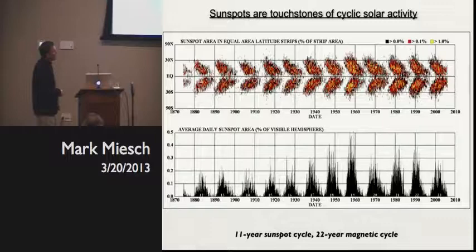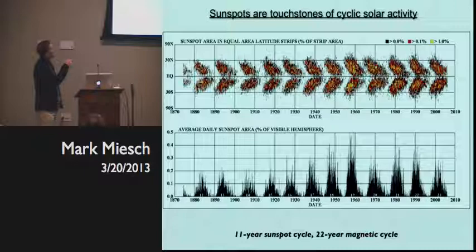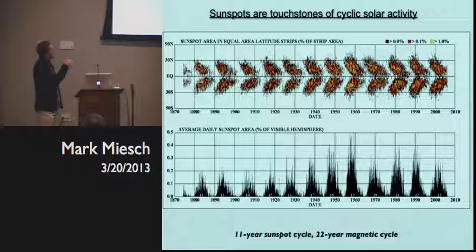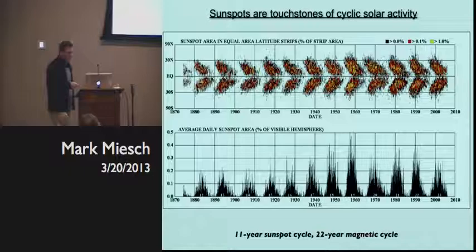Sunspots are sites of flux emergence — sites where magnetic energy passes through the solar surface, coupling the interior and the corona. They're also touchstones of solar activity, the things we measure solar activity by, especially over very long timescales. The peak in sunspot number goes up and down every 11 years; some cycles are stronger than others. We're now in solar cycle 24. The magnetic cycle is 22 years.